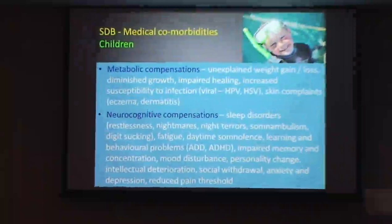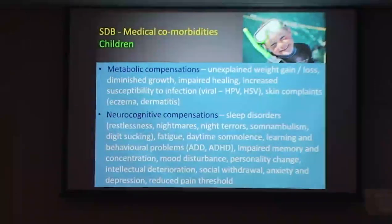Metabolic compensations: these kids don't grow, they don't thrive, they're often small. Compare them with their sibling — you've got the 10-year-old boy and his 8-year-old brother is 10 inches taller. Greater susceptibility to viral infections, and this all makes sense because we have reduced immunity. If we're low in oxygen, we have reduced resistance.